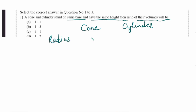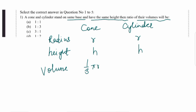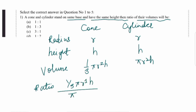Standing on the same base means the radius is the same, and they have the same height. Volume of cone is 1/3 π r² h, and volume of cylinder is π r² h. Taking the ratio: (1/3 π r² h) / (π r² h) — π r² h cancels — and we get 1/3. That means the ratio is 1:3. So option B is the correct answer.